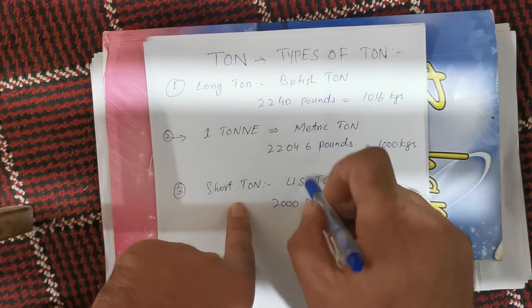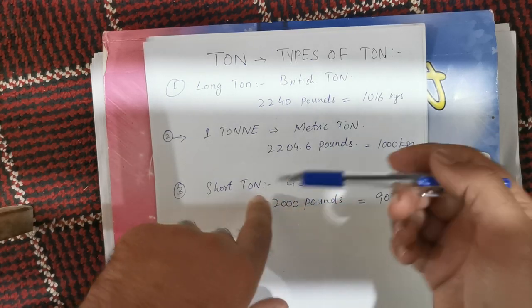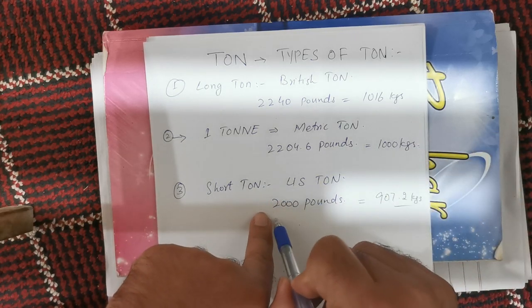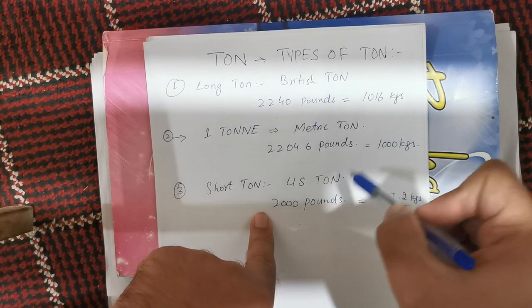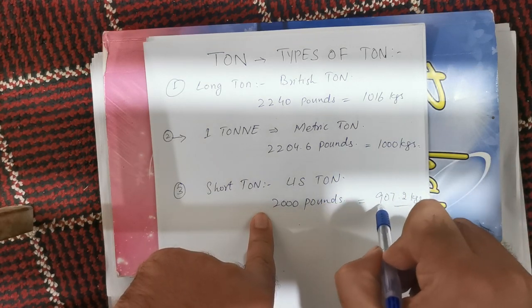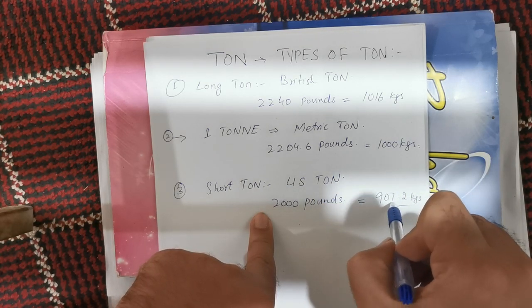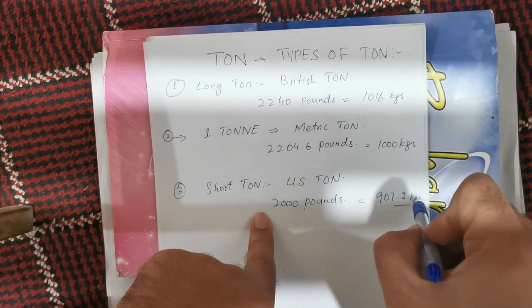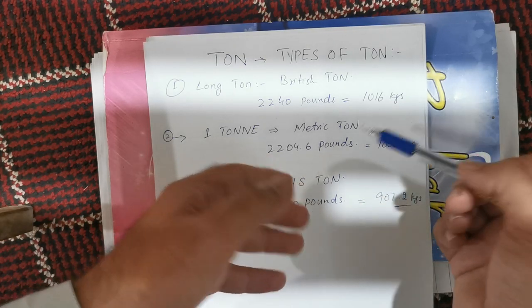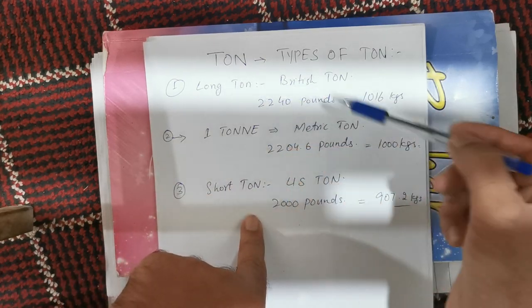The third one, which we generally use on site, is the Short TUN, also called the US TUN. Its value in pounds is 2000 pounds, and if we convert it into kilograms it comes out to be 907.2 kg.